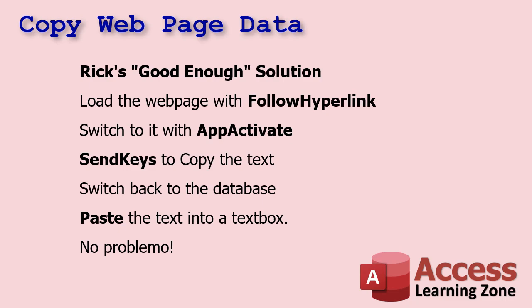So what are we going to do? First, we're going to load the webpage using Follow Hyperlink — that opens up the page in your browser just like you clicked the link yourself. We give it a second to load with a Sleep command, then switch to the browser using AppActivate — basically tapping Windows on the shoulder. Then we use SendKeys to copy the text, same as you'd do with your hands: Control+A to select all, Control+C to copy. We switch back to the database, set focus where we want it — like a text box — and paste. No APIs, no parsing, no arguing with JavaScript. You just copy what you see and stick it into Access.